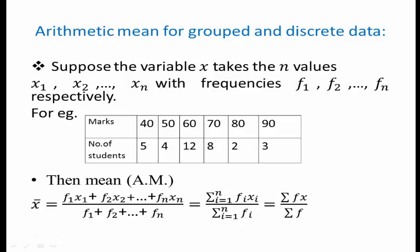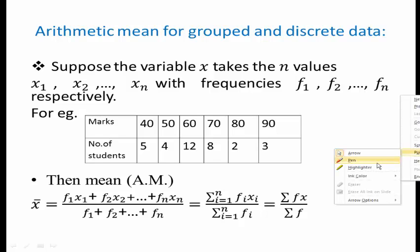Good morning students. In the previous lecture we have seen how to calculate arithmetic mean, or simply mean, for discrete ungrouped data. Now we are going to find the formula for arithmetic mean for grouped discrete data.